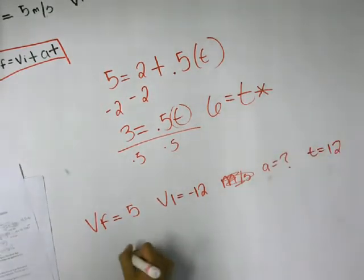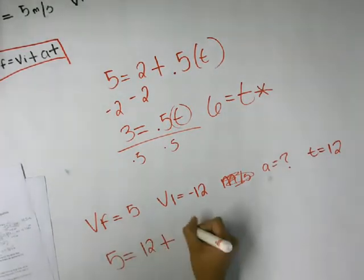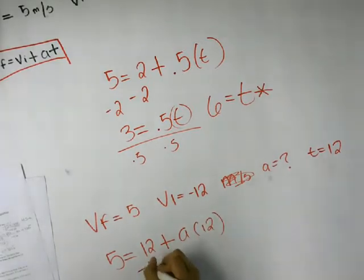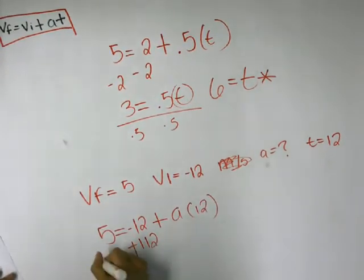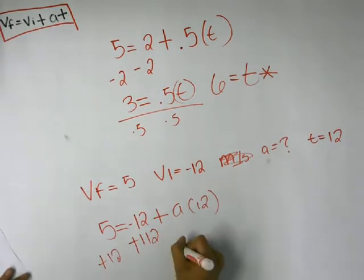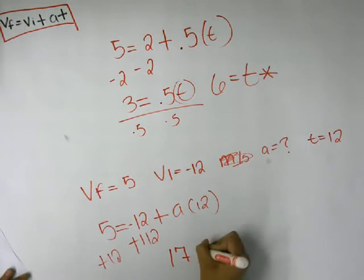5 equals 12 plus A times 12. And then we just solve for the variable once more. So this is actually negative 12. So because this is negative 12, we're going to add 12 to each side. And that would end up giving us 17 equals 12 times A.